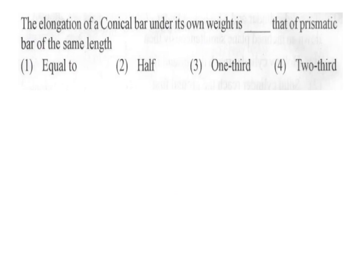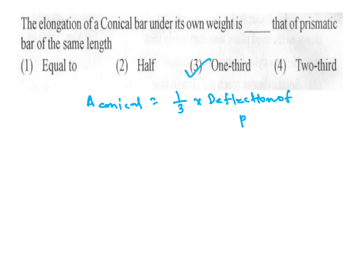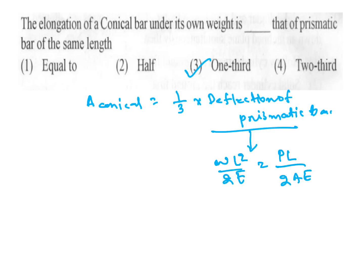The elongation of a conical bar under its own weight is one-third that of a prismatic bar of the same length. Delta_conical = (1/3) × delta_prismatic. The deflection of a prismatic bar = rho·L²/(2E) = PL/(2AE), where P equals the self-weight, which equals specific weight times volume.